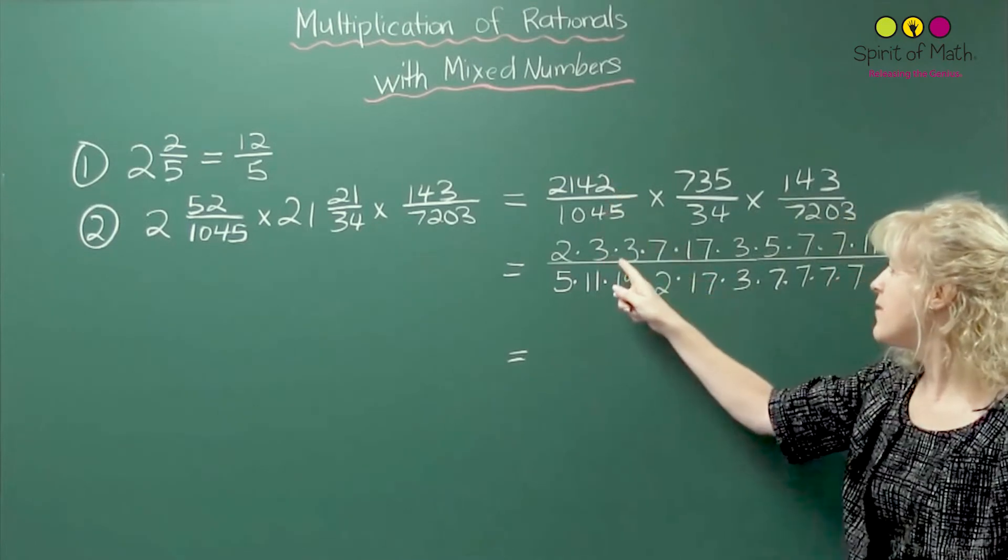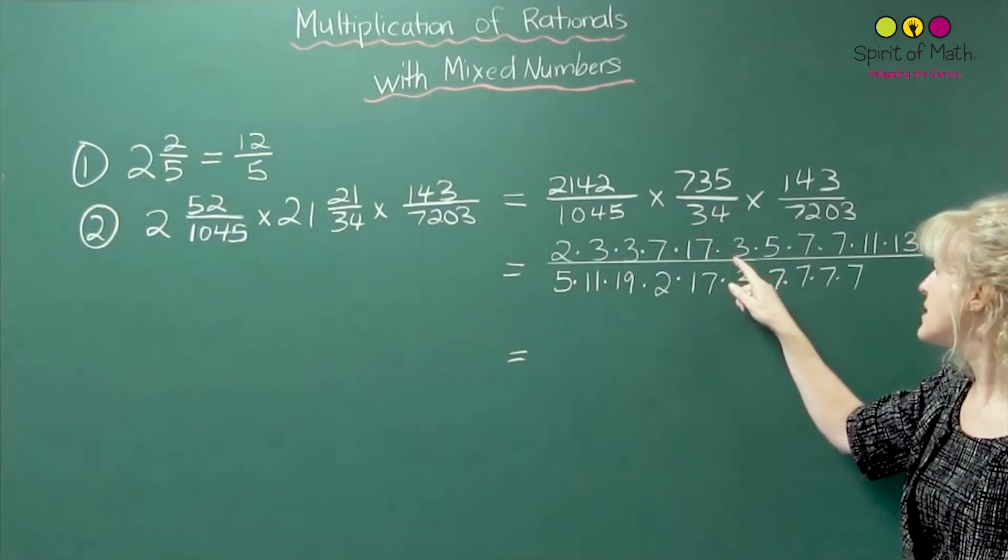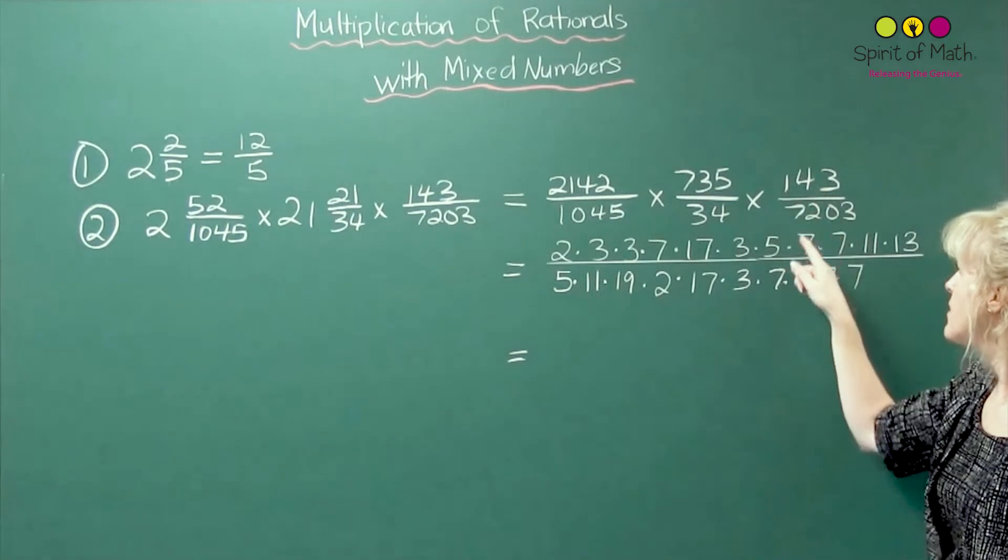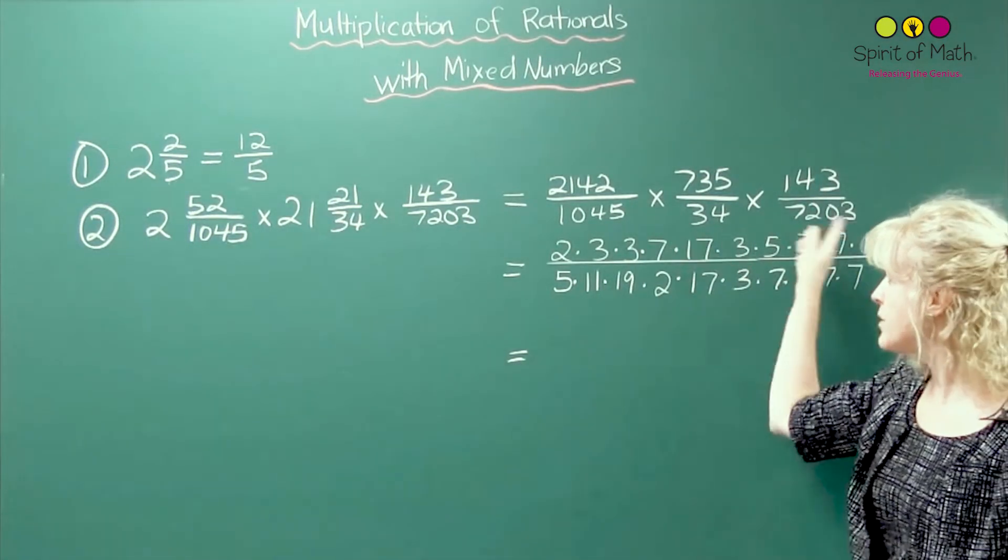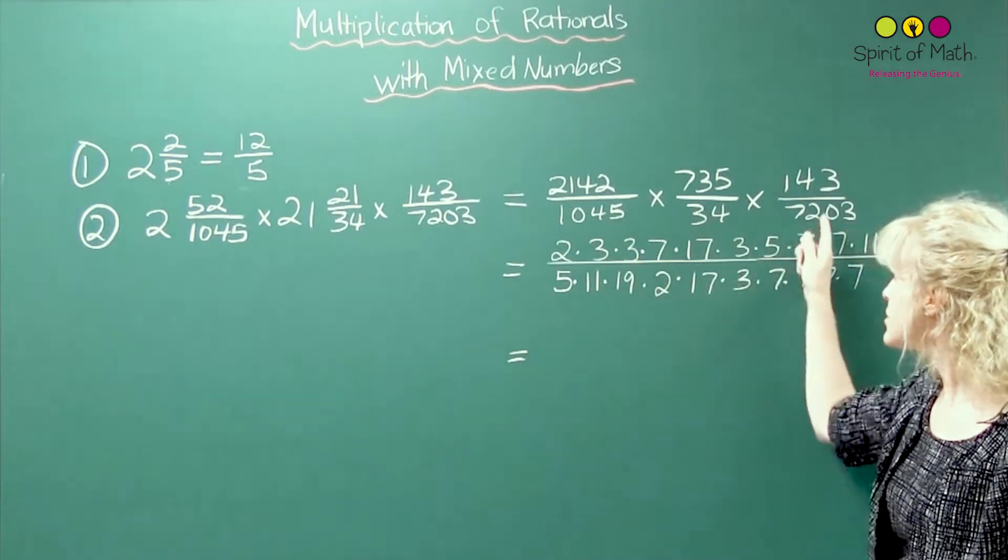So you first of all prime factor the first number, multiply that by the prime factor the second number, and multiply that by the prime factor the third number. Now, you put that over the denominator and again the prime factors for each.